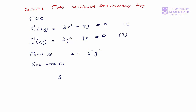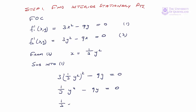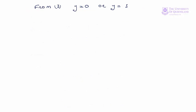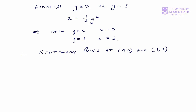Substituting gives us 3 times (one-third y²) squared minus 9y equals 0. Expanding and simplifying we get one-third y⁴ minus y equals 0, which factorizes as one-third y times (y³ minus 27) equals 0. From this, y equals 0 or y³ equals 27, i.e., y equals 3. Since x equals one-third y², when y equals 0, x equals 0; when y equals 3, x equals 3. So we have two stationary points to evaluate: (0,0) and (3,3).